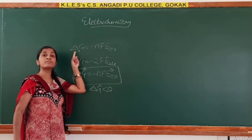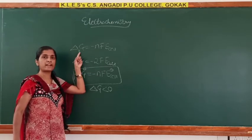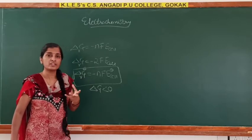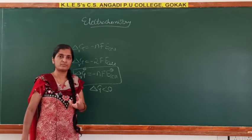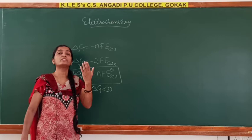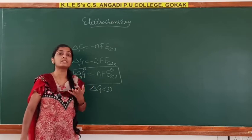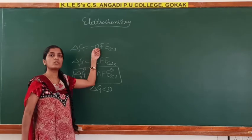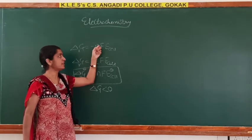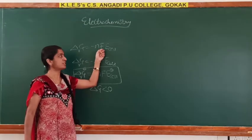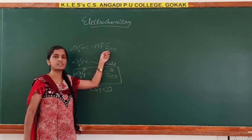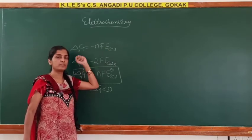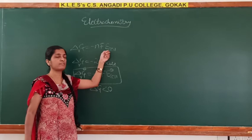Delta G_r is the Gibbs free energy of the reaction — it is the energy of the system which can be converted into useful work. N is the number of electrons involved in the reaction. F is Faraday's constant. E_cell is the EMF of the cell, which is the potential difference between the two electrodes.